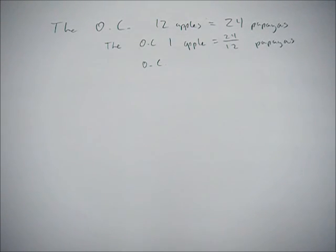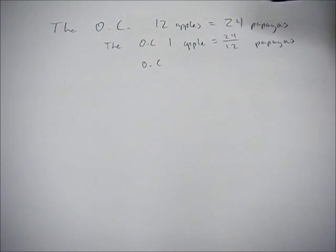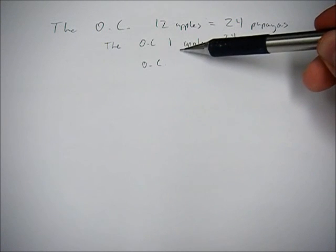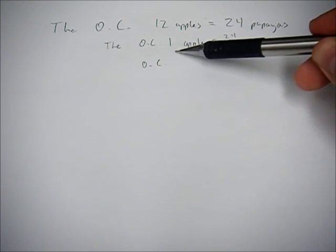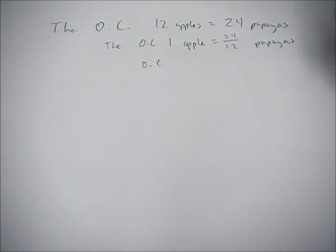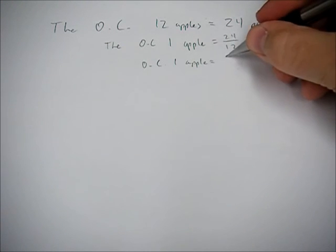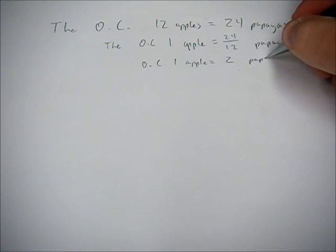So now we've done the opportunity cost for the US. Let's now look at calculating the opportunity cost for Mexico. When we consider the opportunity cost looking at Mexico as a country, we'll start with apples. We had 12 apples equals 24 papayas. Divide both sides by 12, so you get the opportunity cost of one apple is 24 over 12 papayas. Simplify that: the opportunity cost of one apple is two papayas.